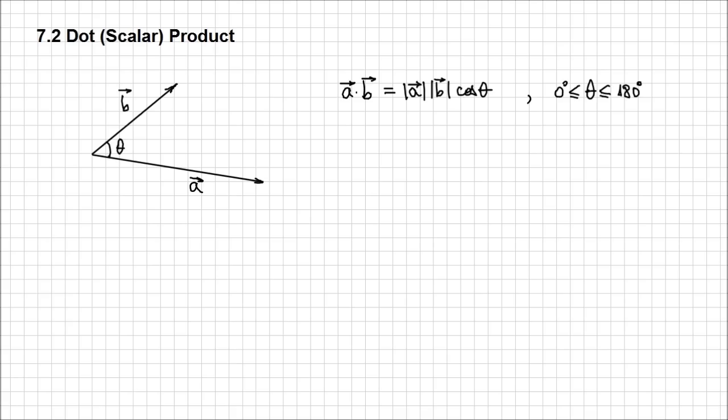The result of a dot product is actually going to be a scalar. For those of you who enjoy using the cross product for multiplication in general, at least for the length of this chapter, you're going to have to make an exception and consider using the dot and the cross in the right place.